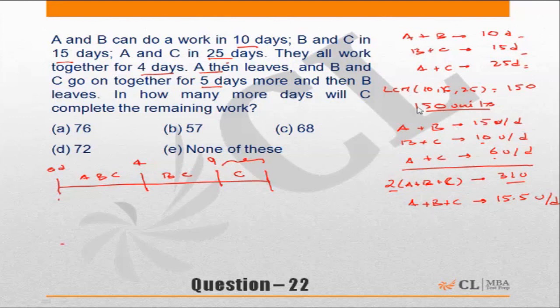Now in this question, we have assumed the amount of work to be 150 units. Why 150? Because it is LCM of 10, 15, and 25. This ensures we don't get stuck with decimals or fractions anywhere. So for the first four days, A, B, and C were working together. In four days they would have done 15.5 times 4, which is 62 units of work.